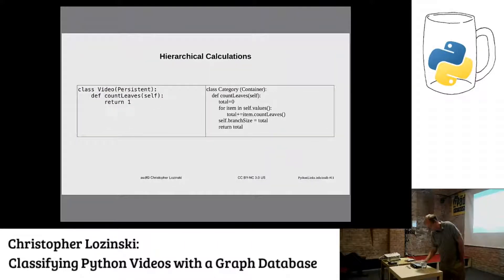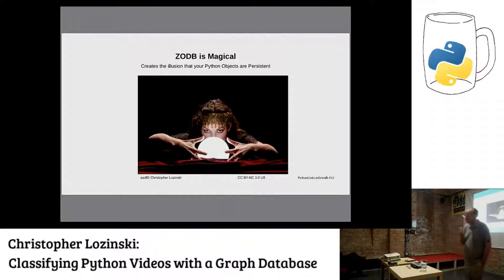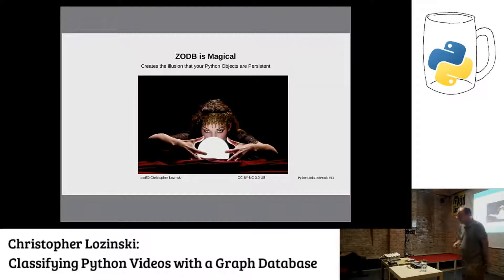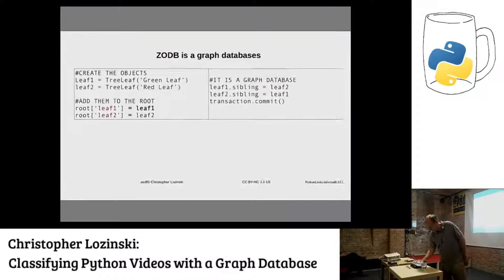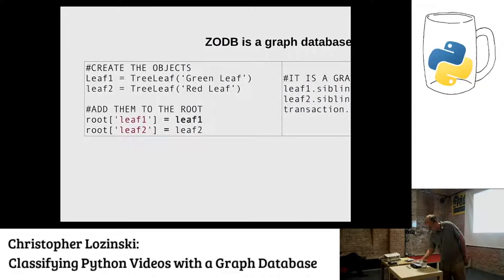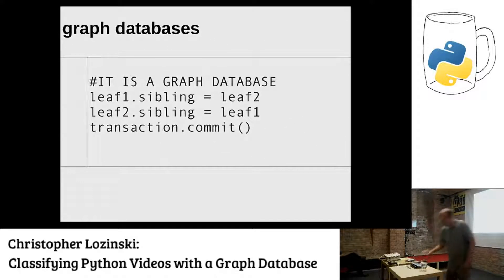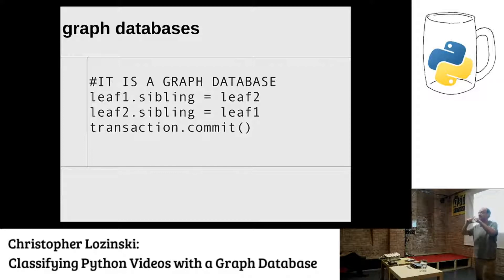ZODB makes it really magical. You call it a database, but it just gives a really simple thing. You reach into the database, pull out the root object, and do some things to it. It gives you the illusion that these objects are persistent. I almost never think about reads and writes. It's really simple — it makes my life much easier. If you simplify, then you can do much more complex things. I often talk about trees, but it's really a graph. We create two leaves, add them to a container, then set leaf1.sibling to leaf2 and leaf2.sibling to leaf1. You do transaction.commit, it works.